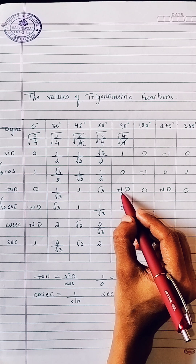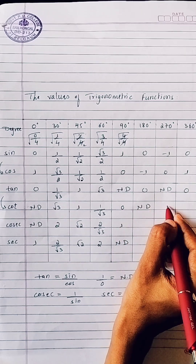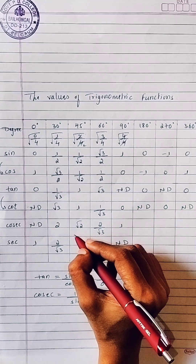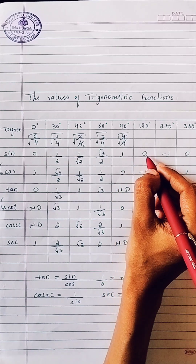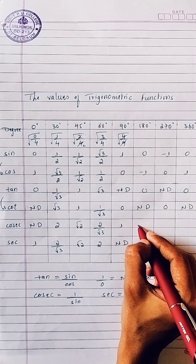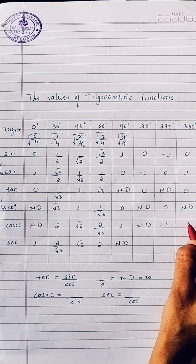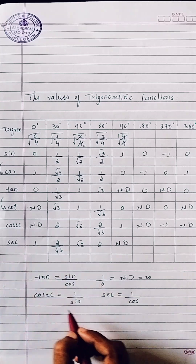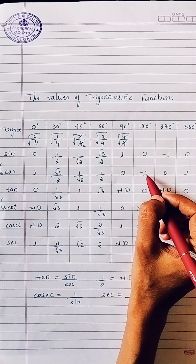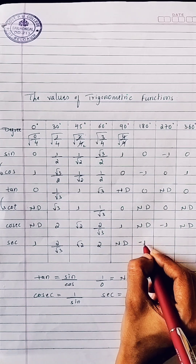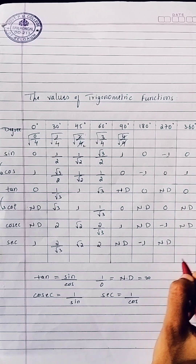For cot from 90° to 360°, we get: not defined, 0, not defined, and 0. For cosec, which is reciprocal of sin: sin 90° is 1 so cosec is 1; sin 180° is 0 so cosec is not defined; sin 270° is −1 so cosec is −1; sin 360° is 0 so cosec is not defined. For sec, which is reciprocal of cos: cos 90° is 0 so sec is not defined; cos 180° is −1 so sec is −1; cos 270° is 0 so sec is not defined; cos 360° is 1 so sec is 1.